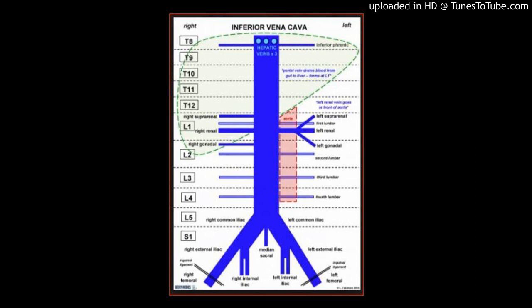1 to 1 propensity score matching generated 310 pairs. After propensity score matching, in-hospital mortality was similar: 41.3% versus 39.0%, OR 1.10, 95% CI 0.80 to 1.52.